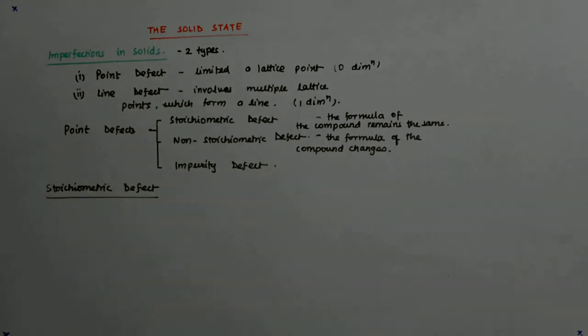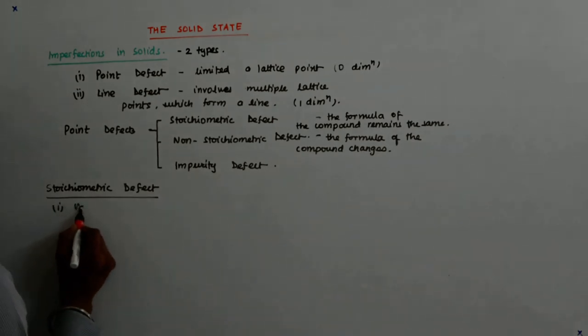Stoichiometric defects - the first category that we are dealing with is the vacancy defect. It is very simple to understand.